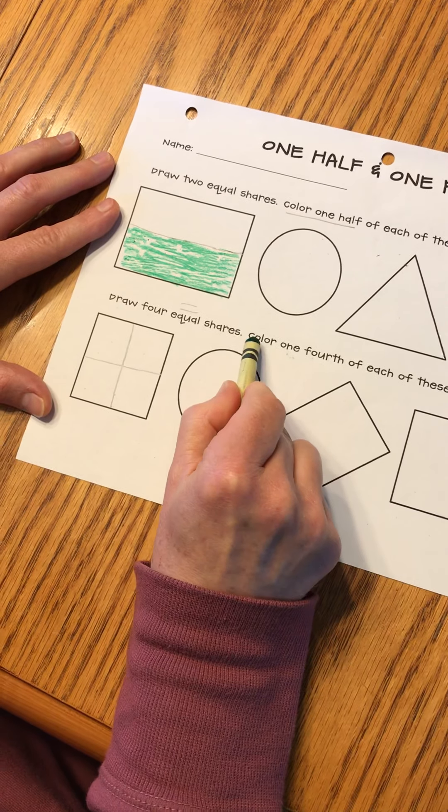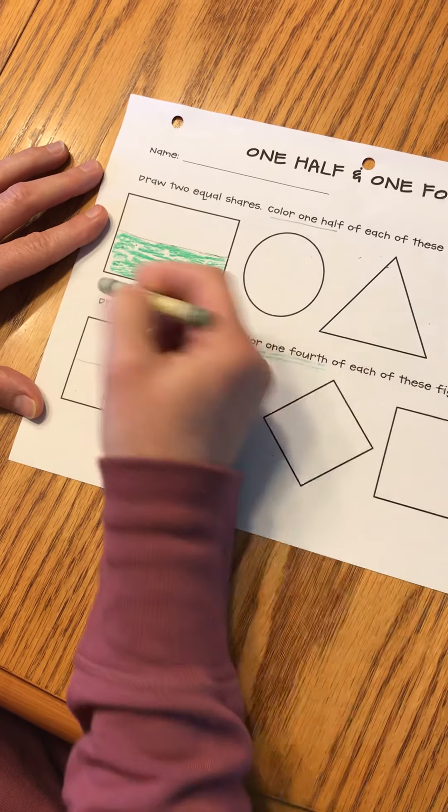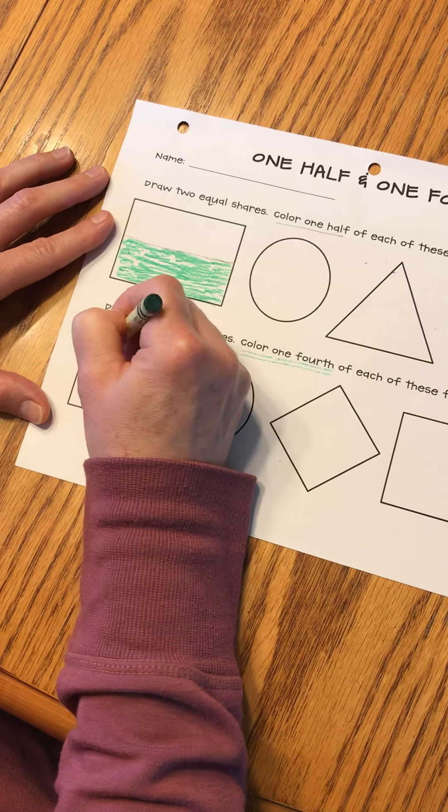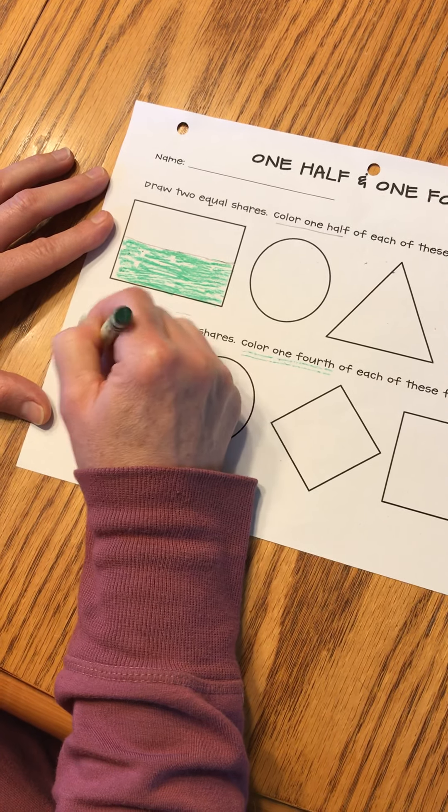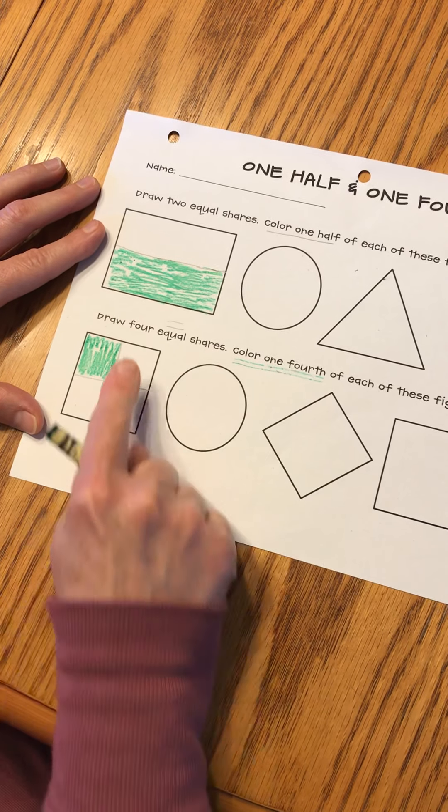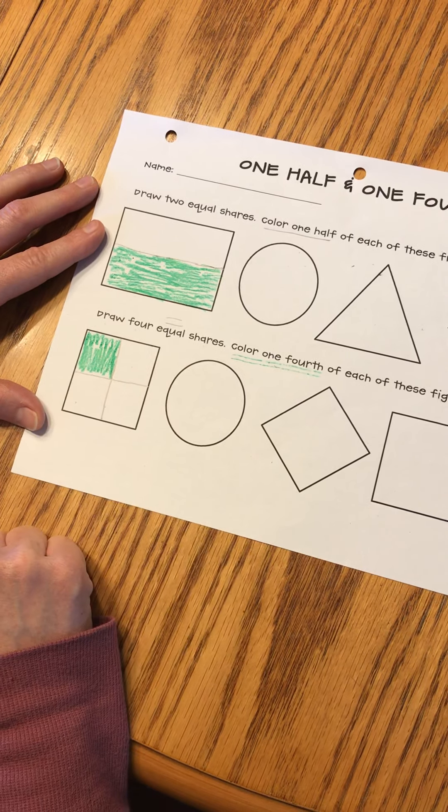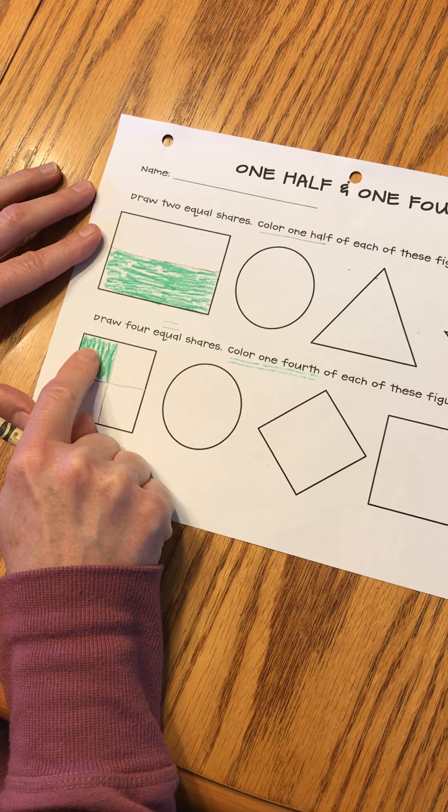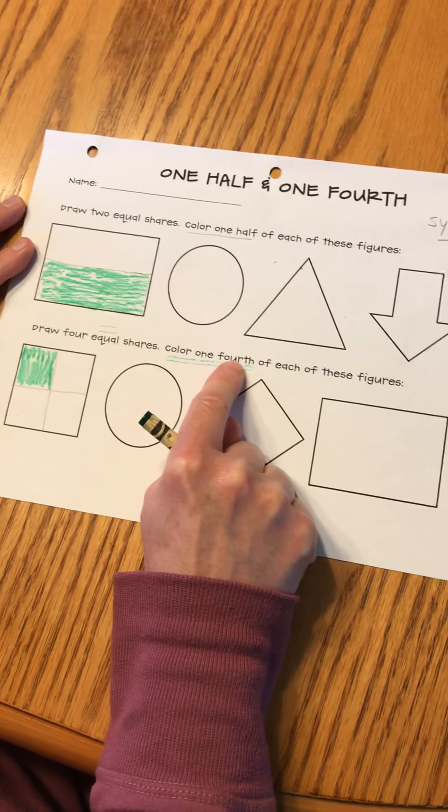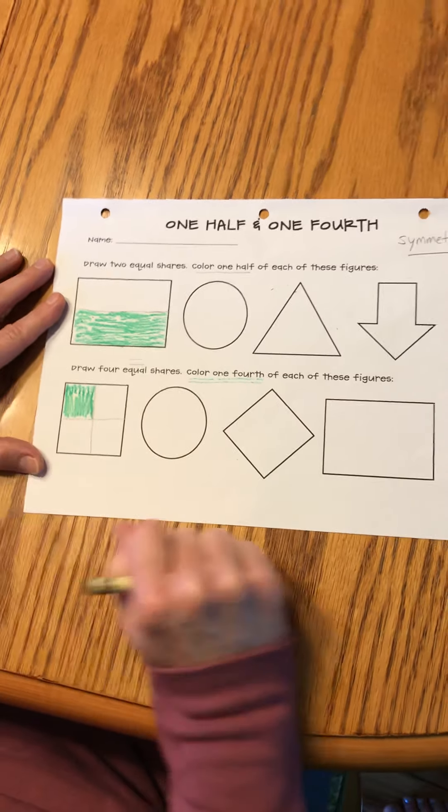The next part says color one fourth. So I'm going to take my crayon and I'm only going to color one of the four pieces like this. So one, two, three are not colored. One is colored. So that's one fourth because it's one of the four pieces.